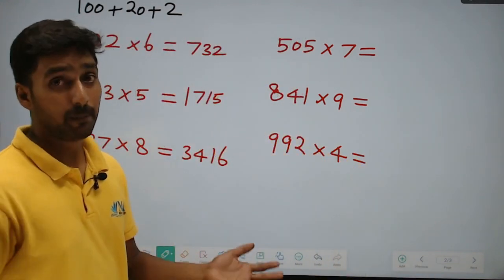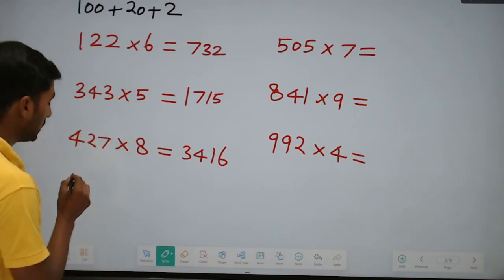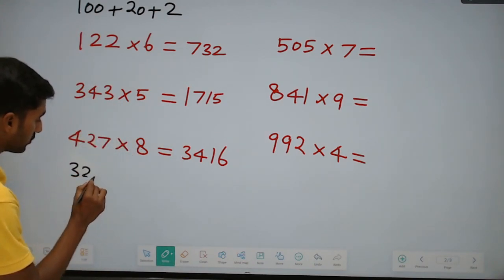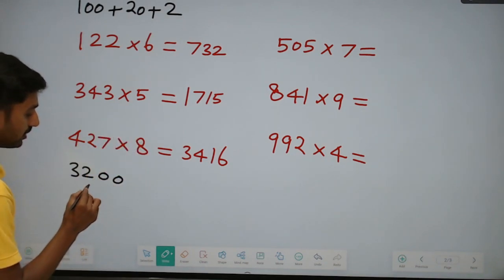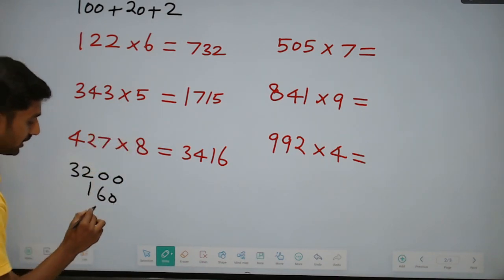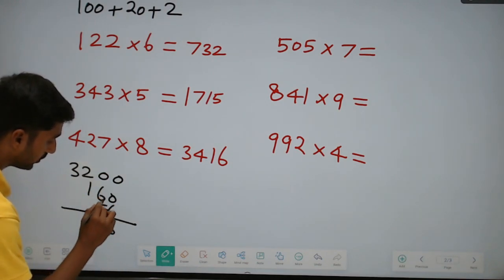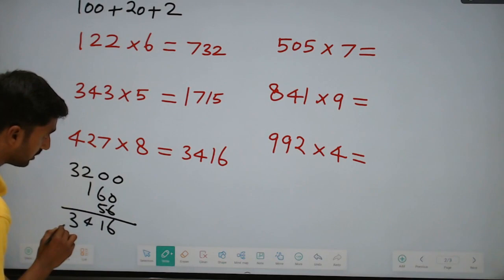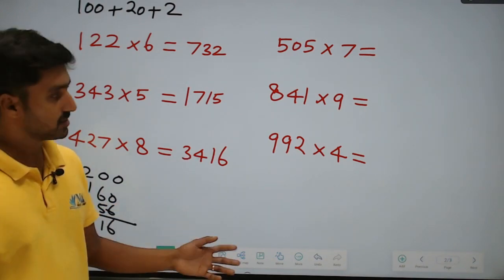Practice this mentally. Without paper and pen, it gets easier. 400 into 8 is 3200. 20 into 8 is 160. 7 into 8 is 56. Add them together: 3416.